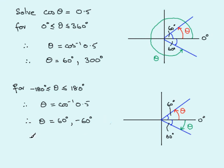So we have theta equals plus or minus 60 degrees. I hope you've understood that and you should now be able to apply this quadrant method for cosine of theta equals a positive value in at least these two given ranges.